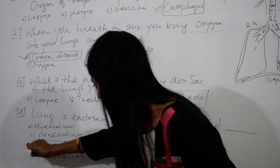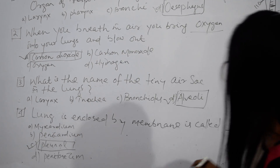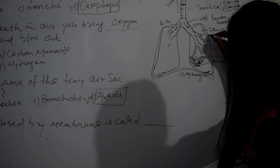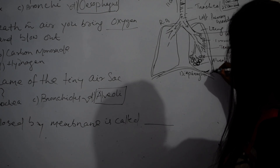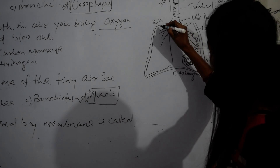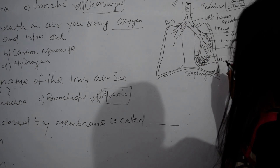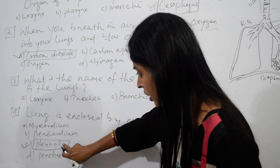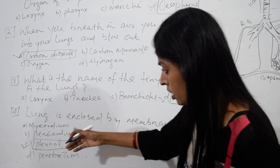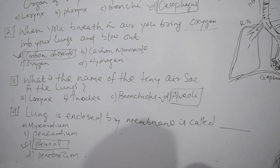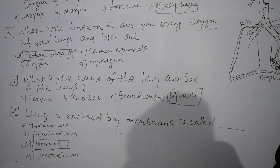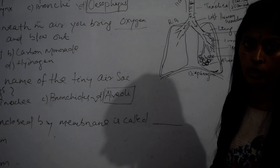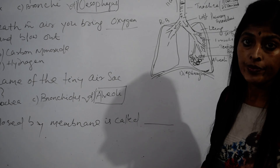Option C, pleura, is the right answer. The lungs are covered by the pleura. The space between the two pleural layers is called the pleural cavity, and fluid is present in that cavity.